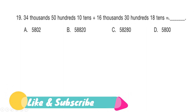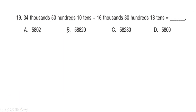Next question: 34 thousands + 50 hundreds + 10 tens + 16 thousands + 30 hundreds + 18 tens equals what? Is it option A: 5,802, option B: 58,820, option C: 58,280, or option D: 5,800? Your time starts now.